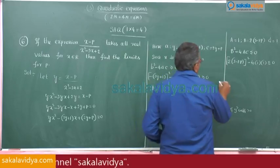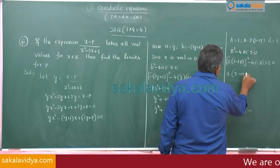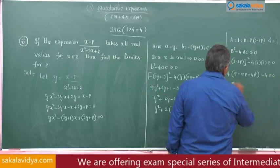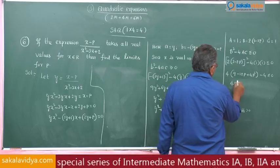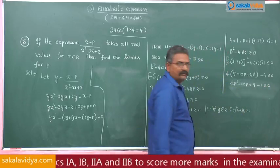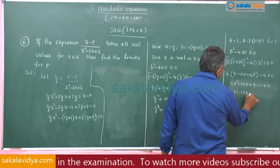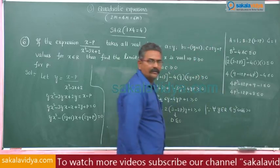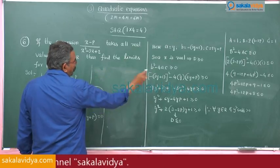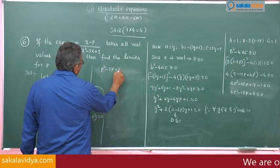Expanding: 4(9 minus 12p plus 4p squared) minus 4 less than or equal to 0. Dividing by 4: 4p squared minus 12p plus 9 minus 1 less than or equal to 0, which gives 4p squared minus 12p plus 8 less than or equal to 0.